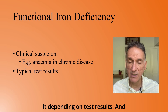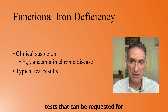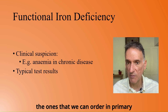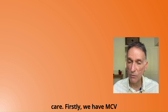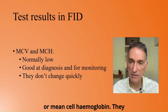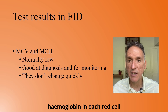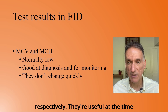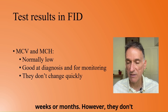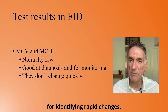We should also suspect it depending on test results. Let's now look at the list of possible tests that can be requested for functional iron deficiency, starting with the ones that we can order in primary care. Firstly, we have MCV or mean cell volume and MCH or mean cell hemoglobin. They tell us the average size of red blood cells and the average amount of hemoglobin in each red cell respectively. They are useful at the time of diagnosis and for tracking trends over weeks or months. However, they don't change weekly, so they are not suitable for identifying rapid changes.